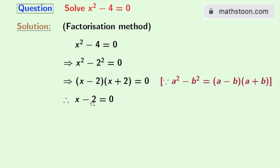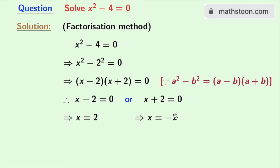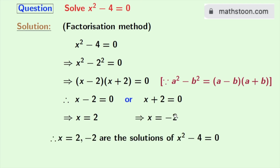So either x minus 2 is equal to 0 or x plus 2 is equal to 0. From this we get x equal to 2, and from this we get x equal to minus 2. So 2 and minus 2 are the solutions of the given equation.